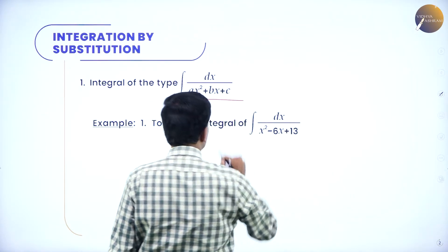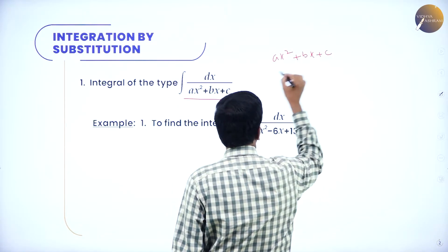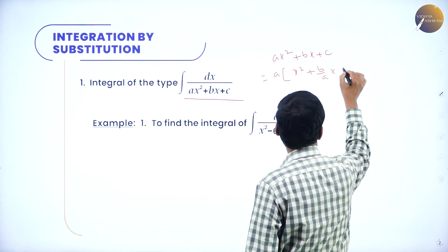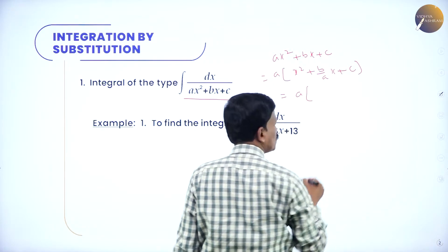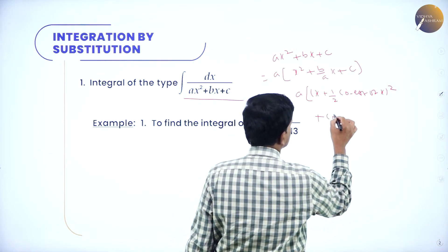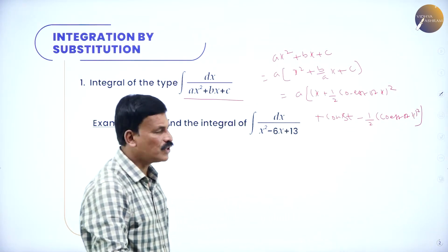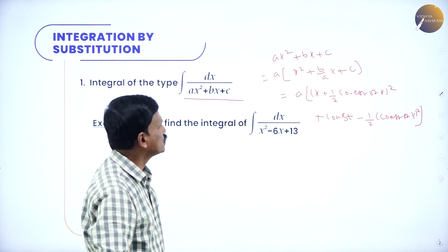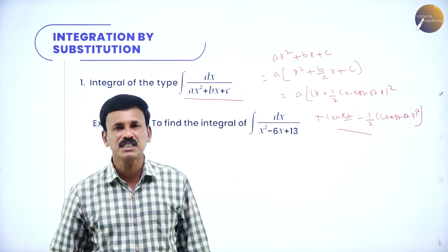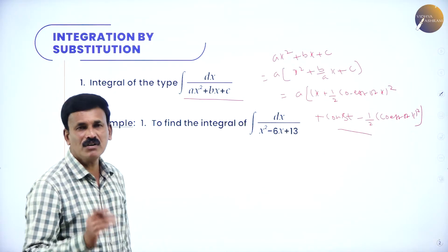How to solve this problem? There is a general method. For any quadratic Ax² + Bx + C, take a out: a times (x² + (B/a)x + C/a). The very important formula we are going to use is: a into (x + half × coefficient of x)² + constant − (half × coefficient of x)². This is the completing the square method. Then evaluate using some important integrals.